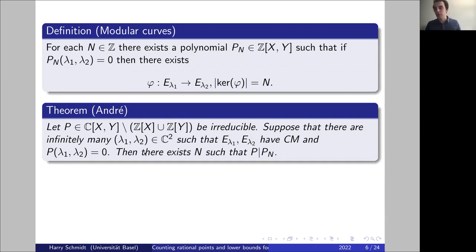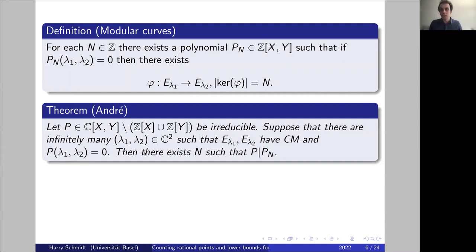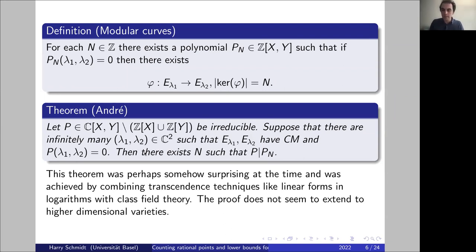André achieved this by using transcendence theory very innovatively — specifically the theorem of linear forms in logarithms, combined with class field theory. It was quite surprising to the community that this works. However, the problem with the proof is that it doesn't seem to extend to higher dimensions; it is really restricted to curves. This is the first instance of the André-Oort conjecture.